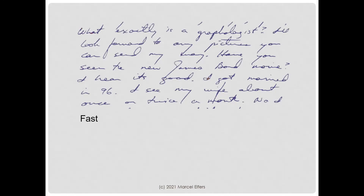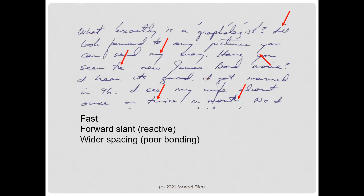This writing is rather fast, and we can see that in several ways. We see that the personal pronoun I is connected to the LL in 'I will.' We also see that the end of the Y moves towards the right — the hand moves immediately to the right instead of going left to make a loop. We see the TH combination where the H disappears and the letters seem to share the same stem, with letter structure disappearing. Without amplitude in a letter it writes much faster, and together with the forward slant — which means reactivity — this individual is impatient. The wider spacing between words implies poor bonding, and the overly connected writing suggests compulsive tendencies.